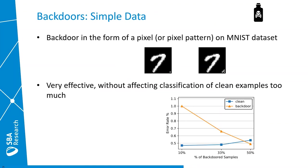Experimental evaluation shows that backdoor attacks can be very effective without causing much drop in classification accuracy on clean samples. Even manipulating up to 50% of the samples from class seven introduces only around half a percent of error on clean inputs, and the backdoors are triggered in 99.5% of cases at prediction time.